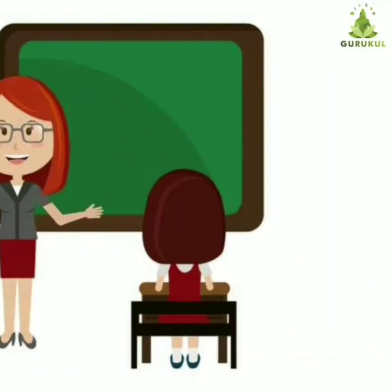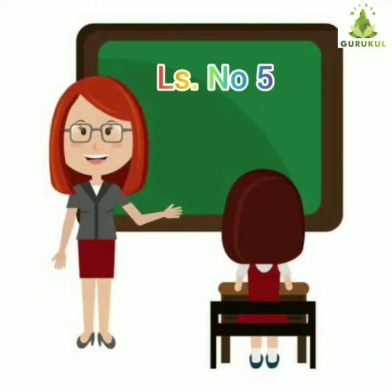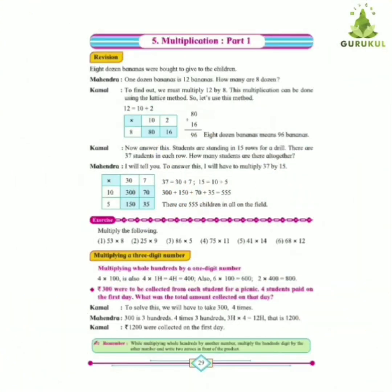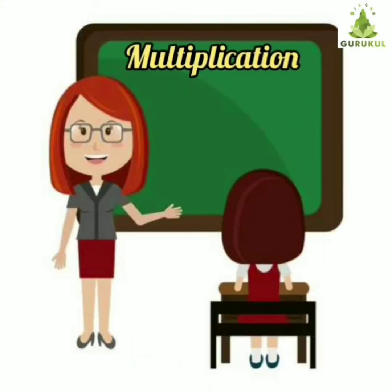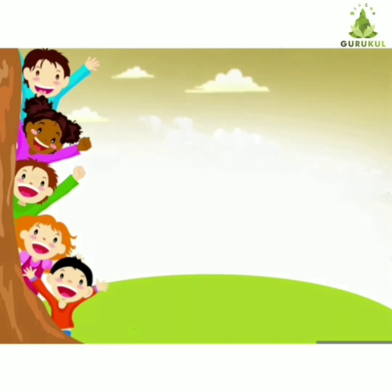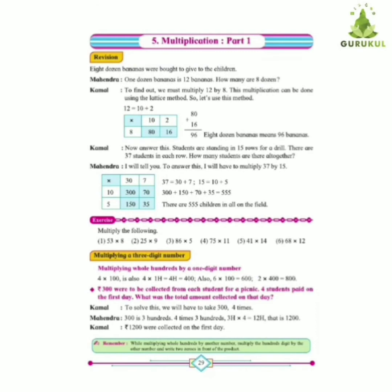Today we will begin with lesson number 5. Tell me, have you learnt tables? Yes, teacher. Very good. Let's understand the meaning of multiplication. Multiplication is the process of calculating the total of one number multiplied by another. Multiplication is also repeated addition. As you learnt multiplication in third standard, today we will solve the multiplication by using the lattice method.